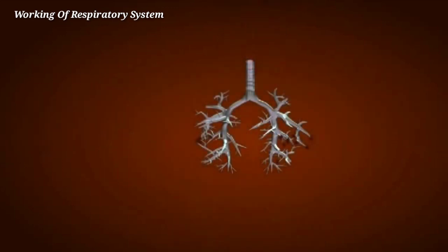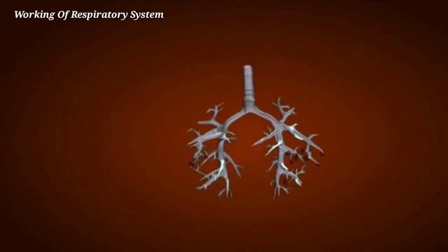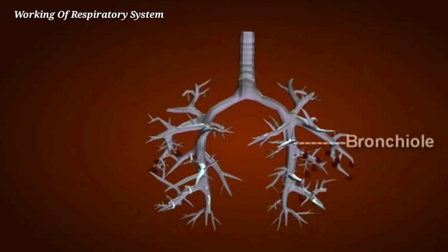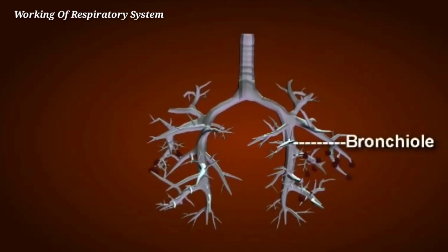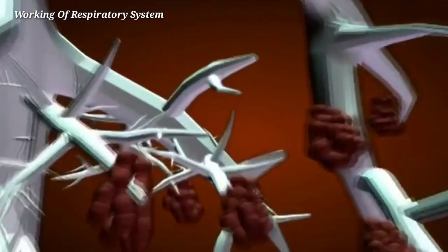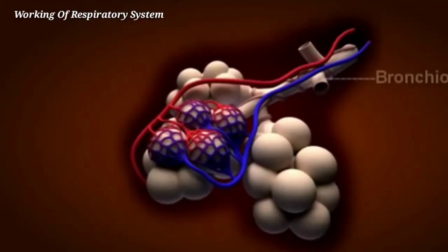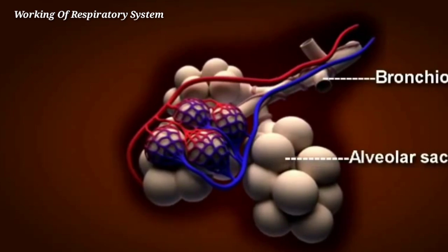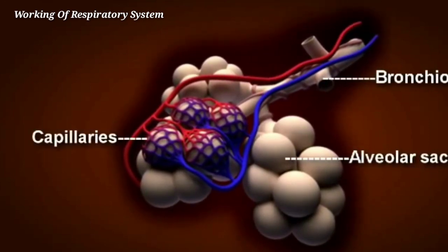The bronchi carrying the air subdivide into smaller branches called bronchioles. At the end of each bronchiole are alveolar sacs. The alveolar sacs are surrounded by blood capillaries where gas exchange takes place.